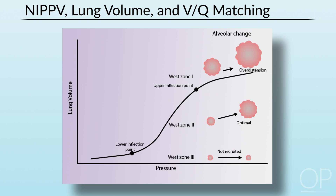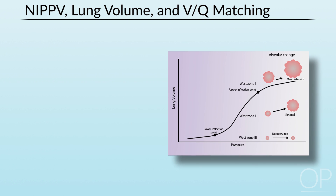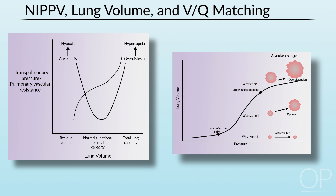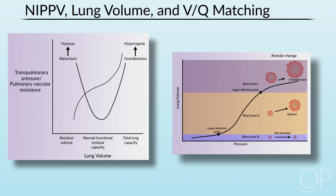As we work to optimize VQ matching, we need to consider the West zones and the compliance curves. The poorly recruited region of the curve where alveoli don't change much in response to pressure is analogous to West zone 3. The linear portion of the curve is analogous to West zone 2 where alveoli are optimally recruited, and the top of the curve where alveoli are overdistended is analogous to West zone 1.